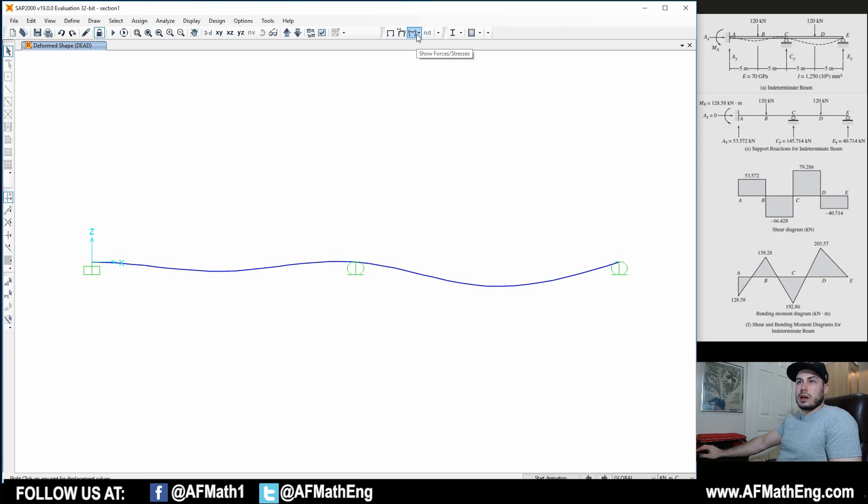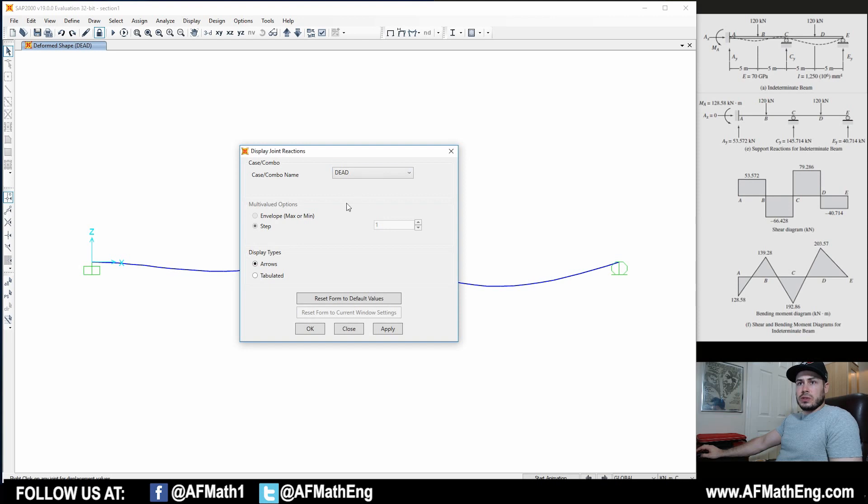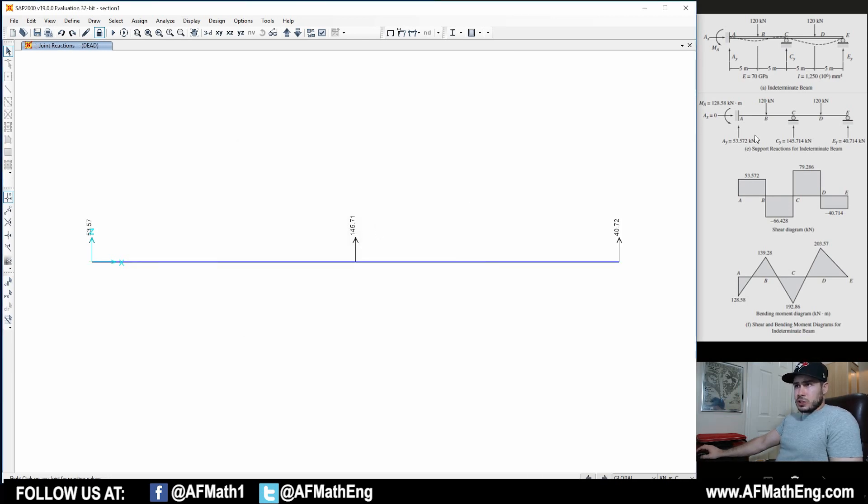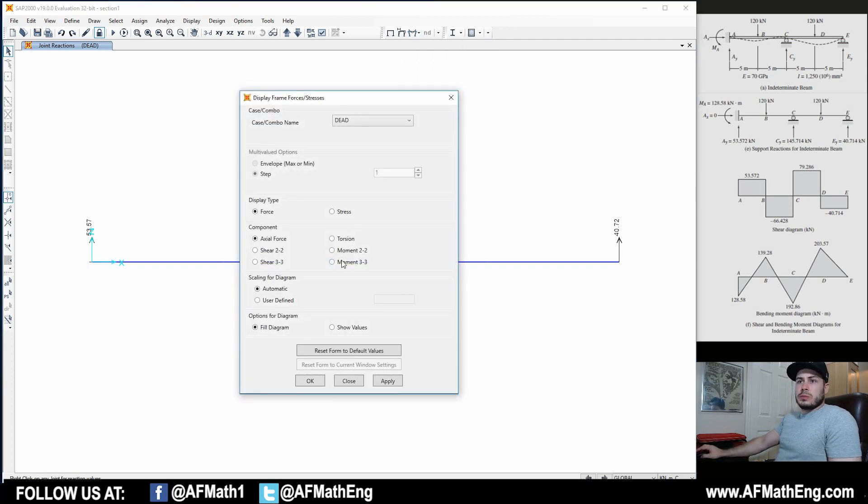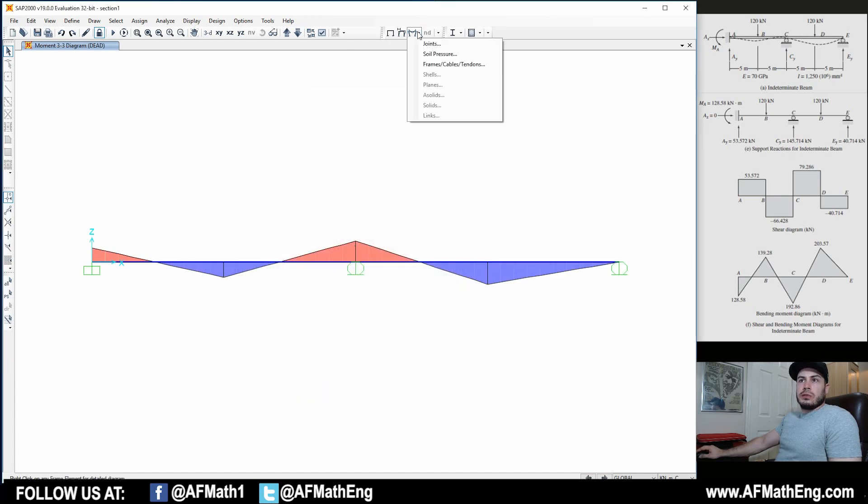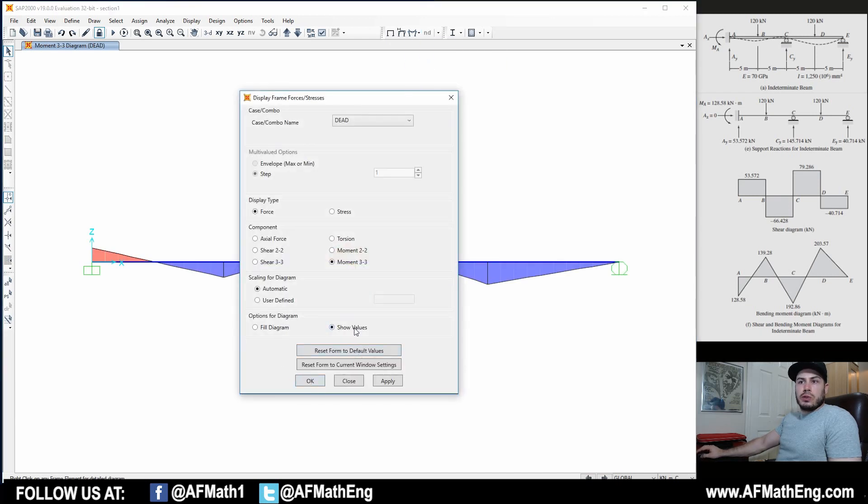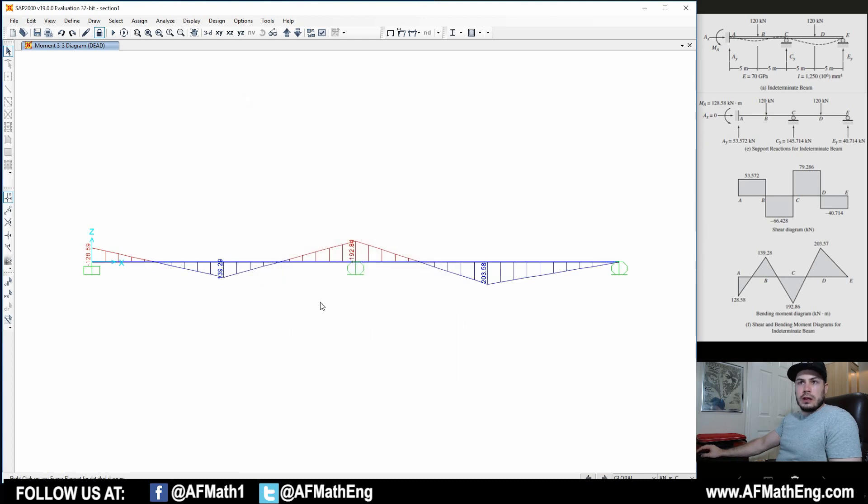If we want to take a look at what just got calculated, we can go to Show Forces and Stresses. We can go to Joints, for example, take a look at the reactions. For A-Y, C-Y, E-Y, they're all the same. As you can see, the rounding is a little bit different, but that's okay. Let's take a look at the bending moment diagram. Remember about the 3-3 axis. And if we go ahead and click show values down here, we can take a look and see that 138.29. So slight rounding errors here by 0.01 or something like that. You'll notice that'll happen sometimes. But pretty much everything is good here.